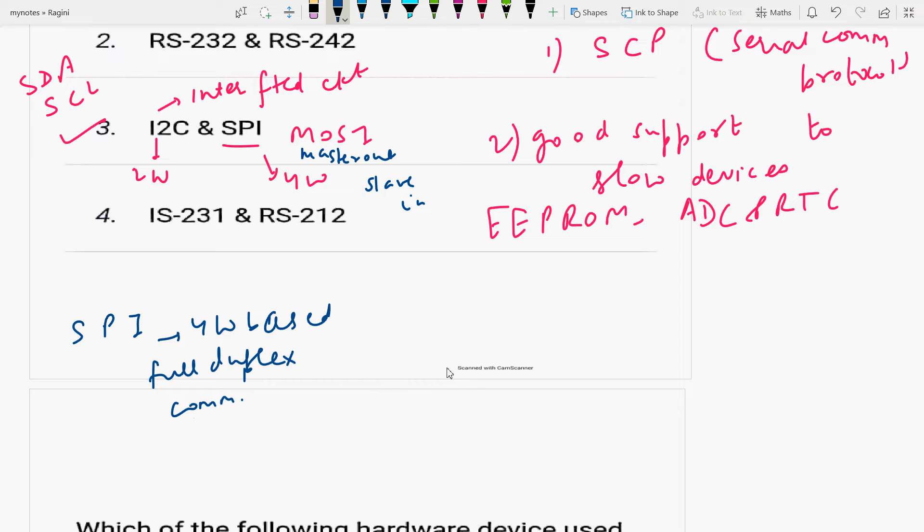These are generally known as MOSI Master Out Slave In, MISO Master In Slave Out, SCL Serial Clock which is produced by the master, and SS which is used to select a specific slave during the communication. So SPI supports only multi-slave, does not support multi-master. It only supports multi-slave.